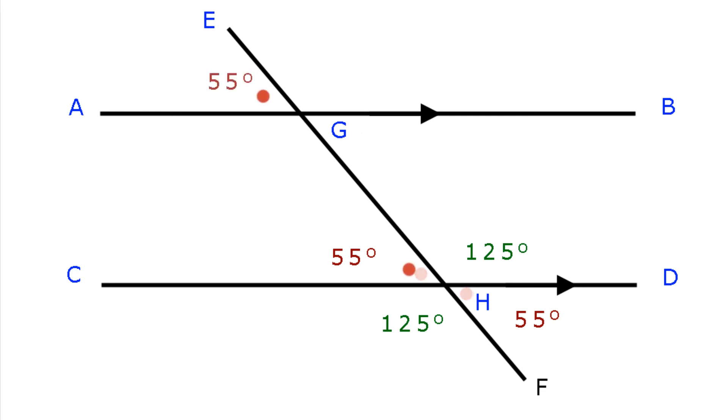Angle CHG equals angle AGE, they're corresponding angles. Therefore angle AGE equals 55 degrees. Angle BGH equals angle CHF, they're corresponding angles. Therefore angle BGH equals 125 degrees.